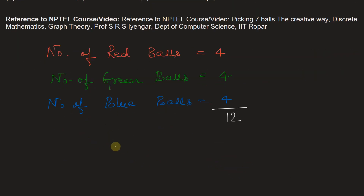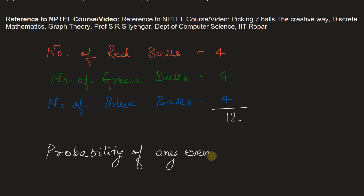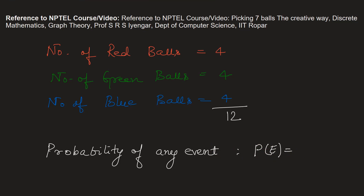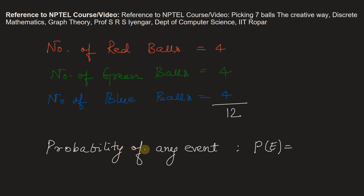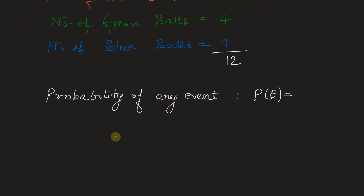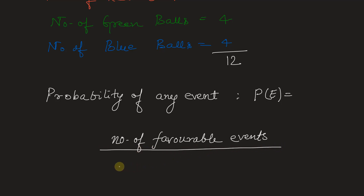The probability of any event E is given by the number of favorable cases divided by the total number of cases. That's how we find the probability of an event.